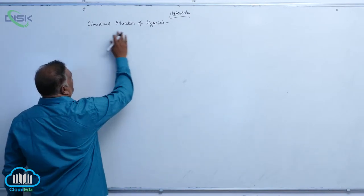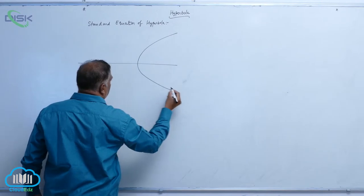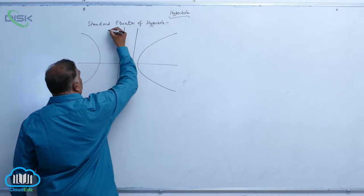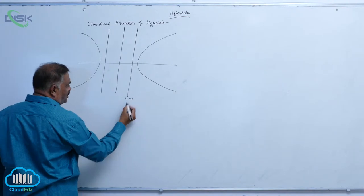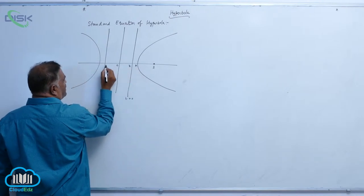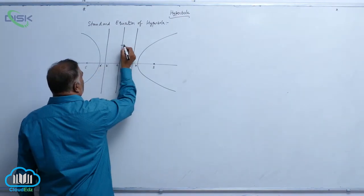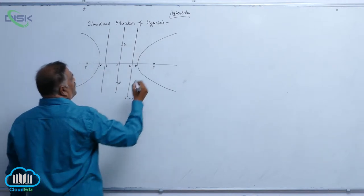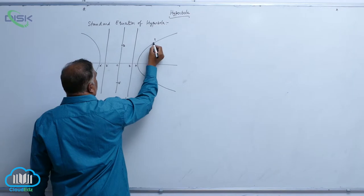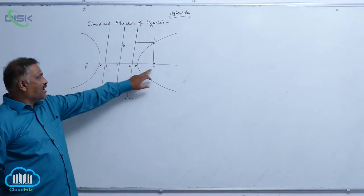Now let us see the standard equation of hyperbola. Let us draw the diagram first. This is going to be the hyperbola, and L equal to 0 is the directrix. The labeled points are A, Z, C, Z dash, A dash, S dash, and some points B and B dash. Let us take a point B here and draw a perpendicular. This is one focus, one directrix.